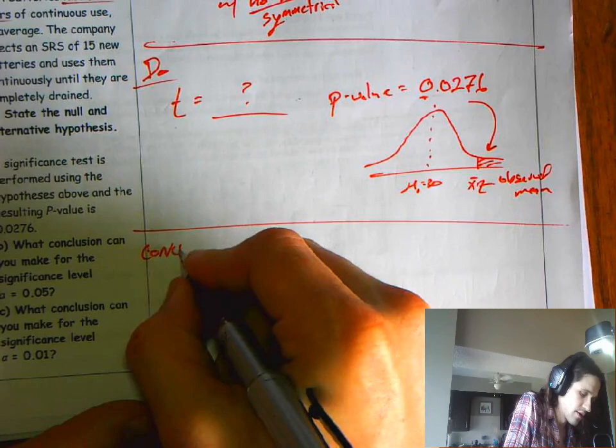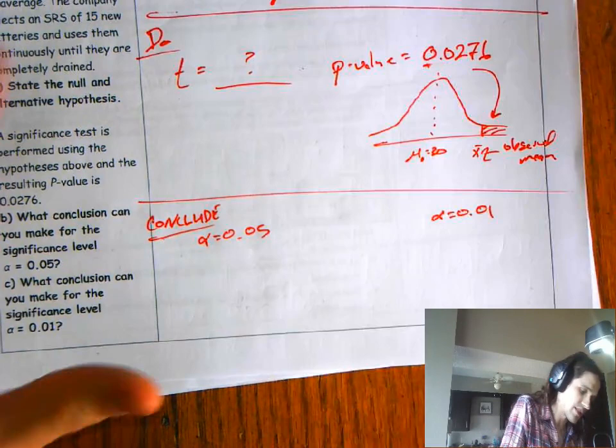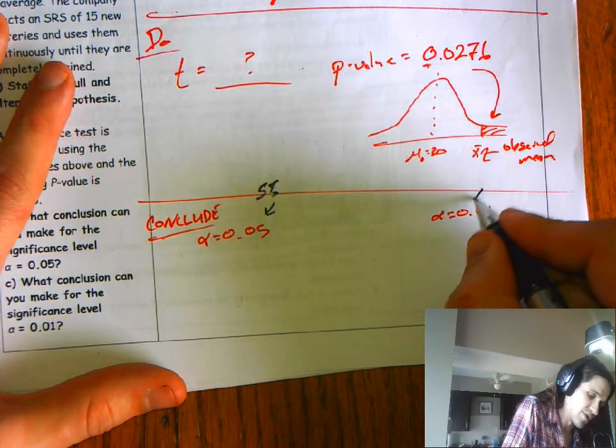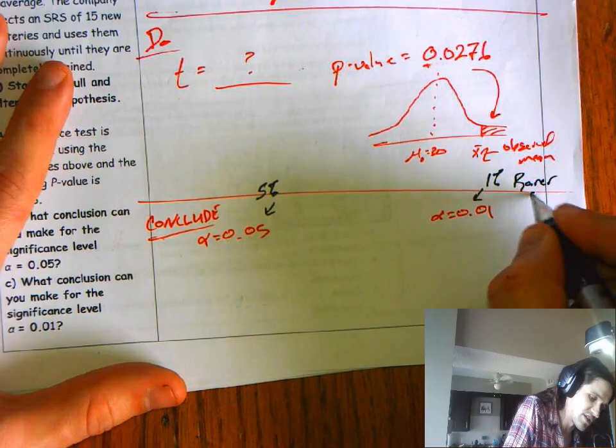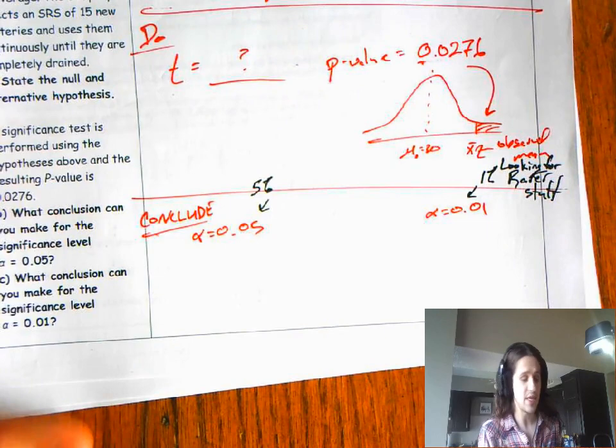Well, we got two conclusion statements here. We've got for alpha equals 0.05 and we've got alpha equals 0.01. Let's think about what that means. This is like saying we're looking for something that would happen 5% of the time. Looking here 1% of the time. This is kind of looking for rarer stuff.